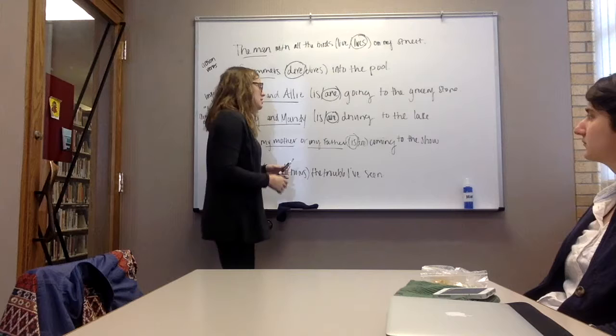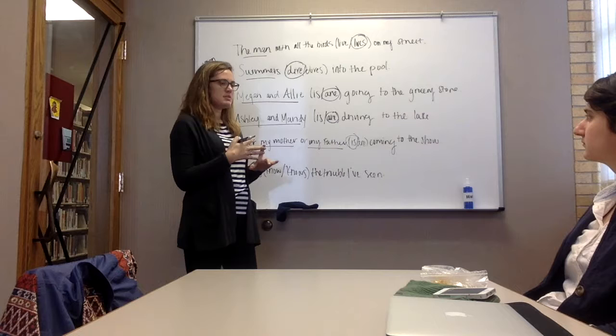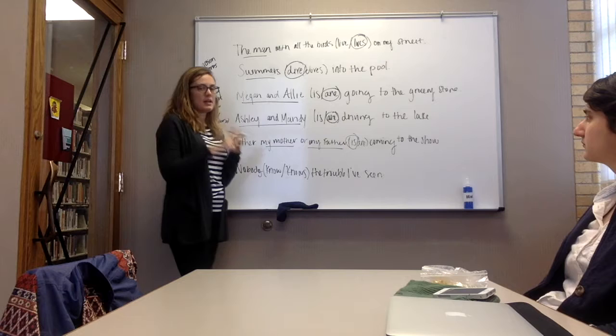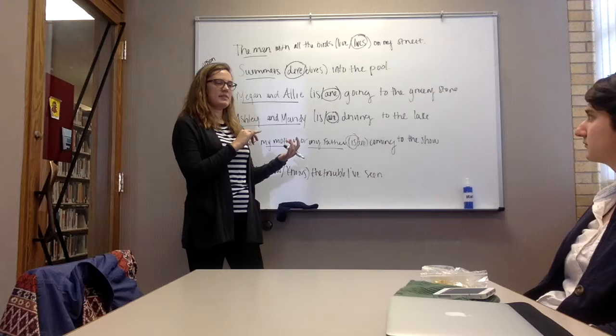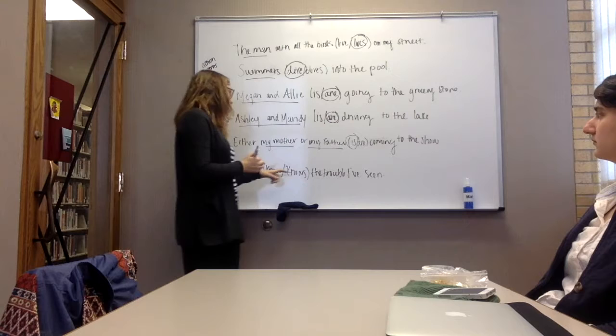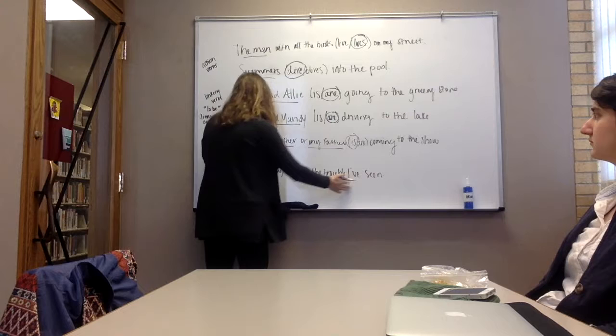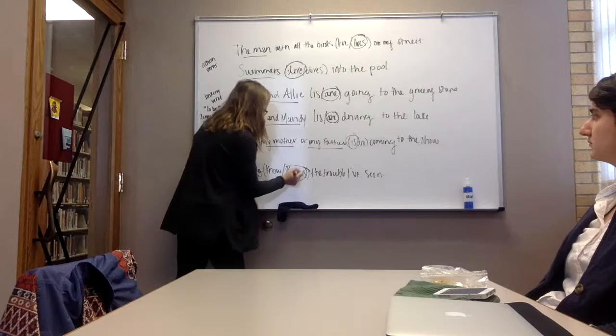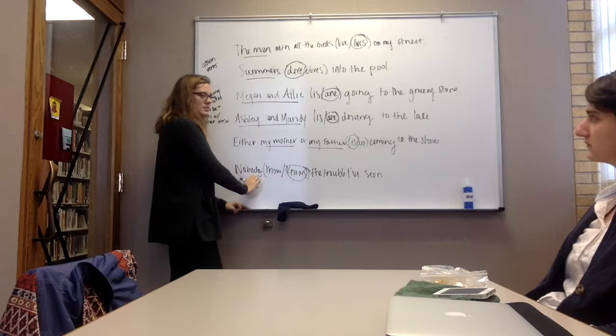So, then I'm just going to highlight one more exception that we can sometimes see. Nobody and everybody are words that describe a lot of people, but are still a singular subject. So, for an example, in the sentence, nobody know or knows the trouble I've seen, the verb would be, nobody knows, because this is still singular. So, even though it might be representing more than one person, it is still a singular subject.